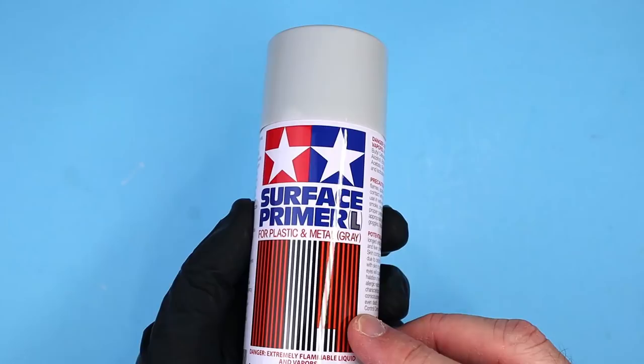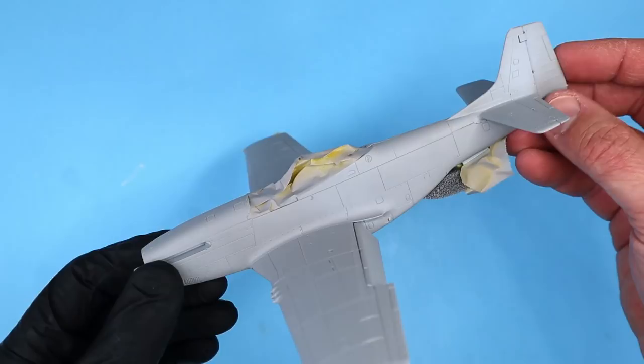Now if you've been watching my previous videos you've seen that I don't always prime my models. But when laying down a natural metal finish it's important to make sure that the surface is free of any blemishes so a coat of Tamiya fine surface primer does the trick.